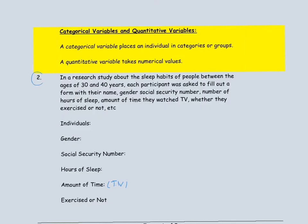In the second problem, the research study is about sleep habits of people in a certain age group — people in the age group 30 to 40 years. So people between the ages of 30 and 40 are the individuals in this study. Each participant fills out a form and provides the following information: gender, social security number, hours of sleep, amount of time spent watching TV, and whether they exercise or not.